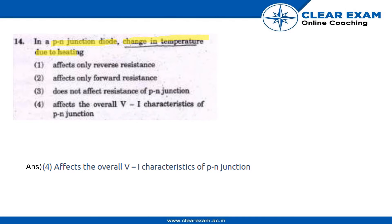The answer is very simple. The only thing that is affected when there is a change in temperature due to heating in a P-N junction diode is that the overall VI characteristic of the P-N junction changes. Hence, the fourth option is the correct answer.